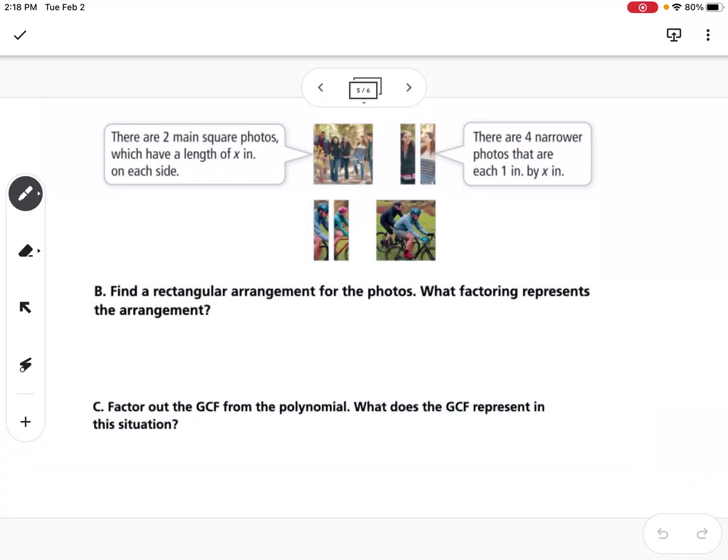So now it says to find a rectangular arrangement for the photos. Let's put them all in a line. So I could do the 2 squares and then the 4 narrow rectangles.